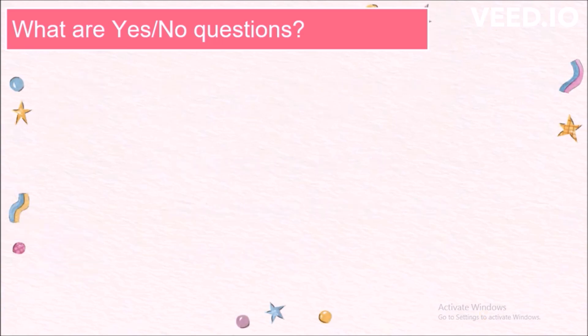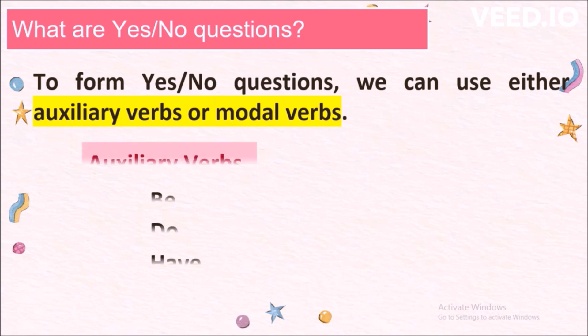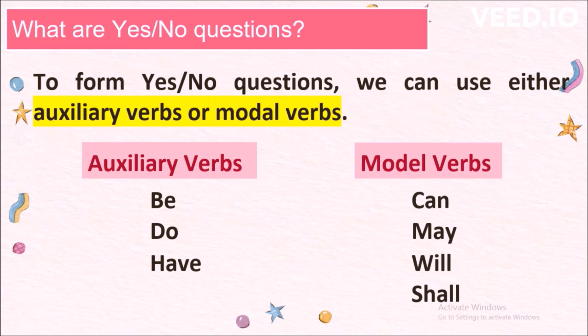To form yes/no questions, we can use either auxiliary verbs or modal verbs. Under auxiliary verbs, we will be discussing how to form yes/no questions with be, do, and have. And under modal verbs, with can, may, will, and shall.